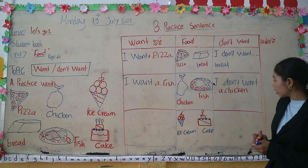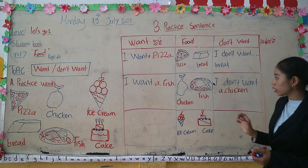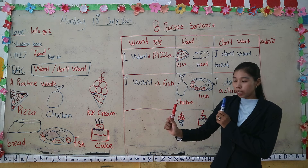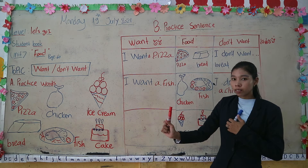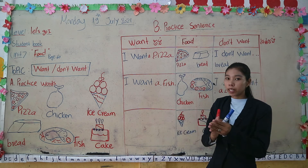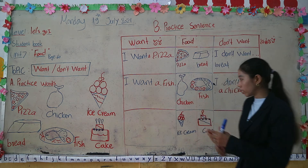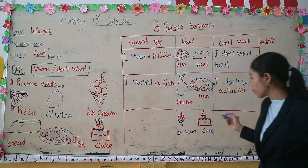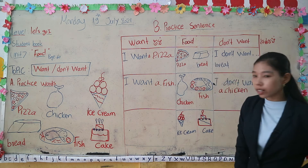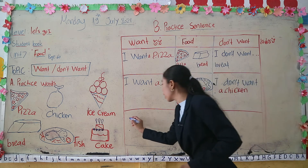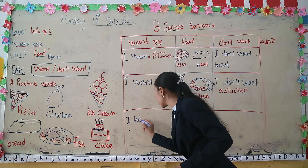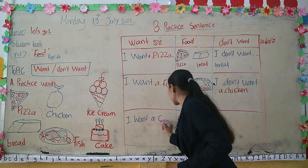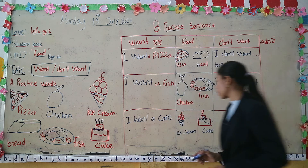Okay, are you clear about the word 'want' and 'don't want'? I want a cake — if you want cake, you write: I want a cake.